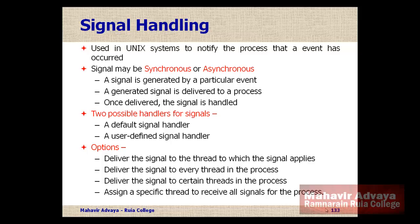A generated signal can be sent to all threads in the process, and each thread recognizes whether the signal was meant for it. Alternatively, the signal can be delivered only to certain threads, or a specific thread can be assigned to receive all signals for the process and take care of their handling.